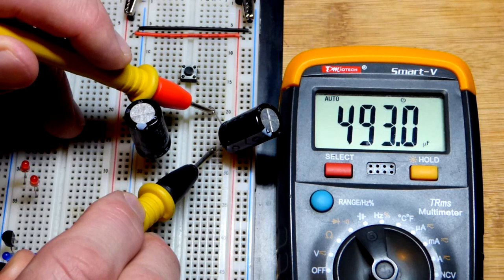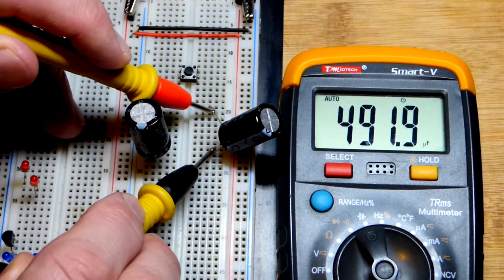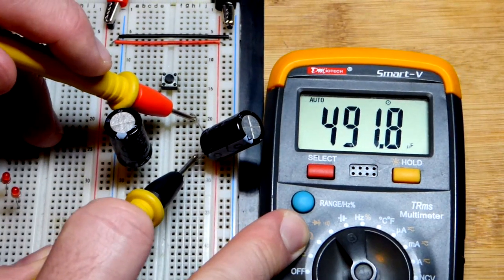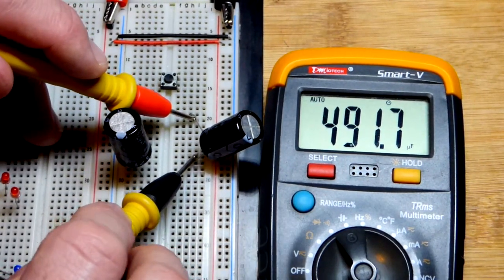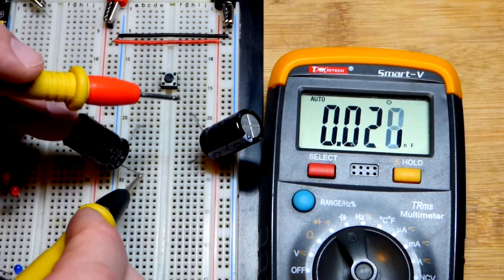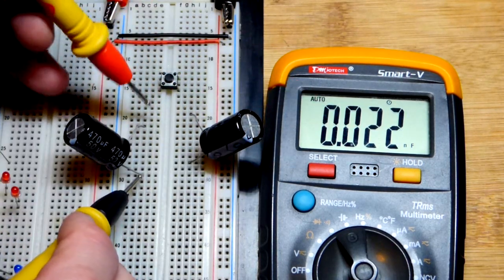We just go across the two terminals. It's polarized, so we've got to make sure the black probe goes to the negative side, and then the red probe to the positive side. It's been varying a little bit, but that may be due to how I am making my connections. But, it's been pretty close. It said about 490.